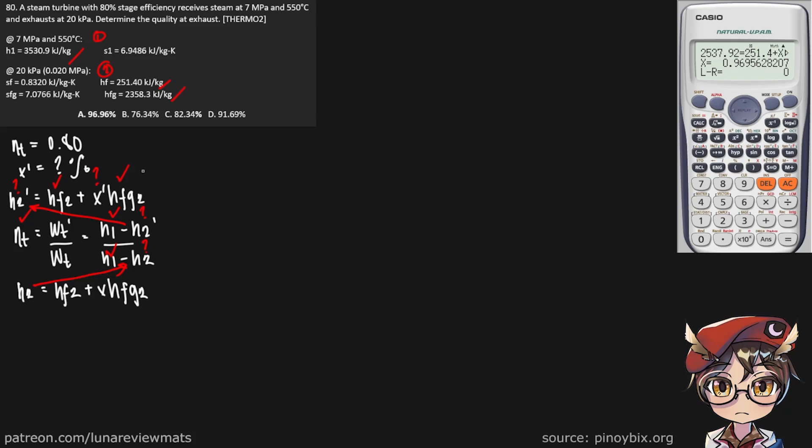These values are already given up here. But notice this X here—this is the ideal steam quality at the exhaust, which we can find using our entropy.